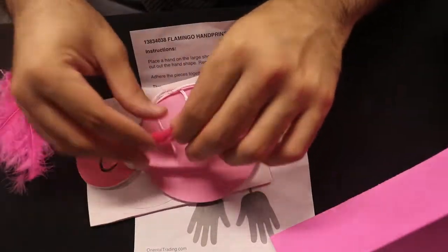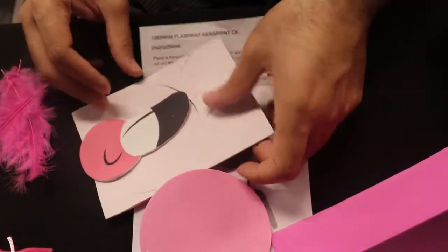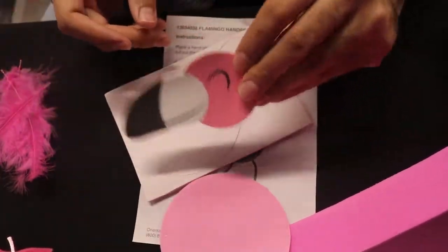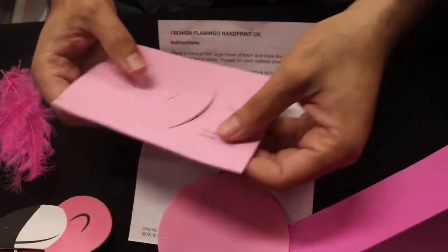We have a couple of pink feathers, some pipe cleaners, a piece of string, a big circle, flamingo face, and these circles with a self-adhesive back.